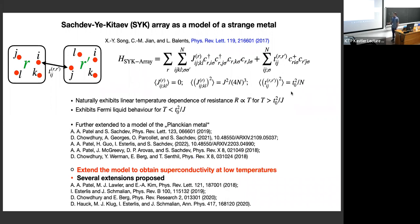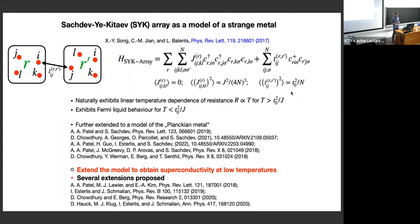Important properties of this model: it exhibits a linear temperature dependence of resistance at temperatures higher than the typical scale T-squared over J, and a Fermi liquid T-squared dependence of resistivity below this scale. These results were obtained in the work of Balents and extended in further works on the theory of Planckian matter. Because the strange metal phase is a typical part of the high-Tc phase diagram, the natural desire is to extend this model to obtain other parts, including the superconducting phase.